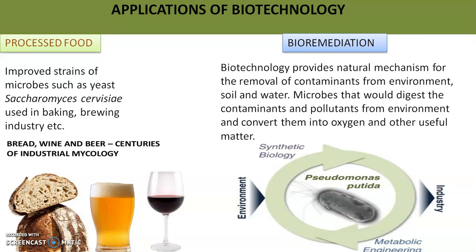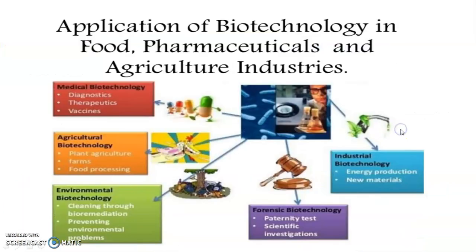This genetically modified microbe is used to clear oil spills in water bodies. Oil tanks carried by ships may have leakages, and when oil spreads on the surface of a water body, it blocks air and sunlight, which can be very lethal for aquatic organisms. Such genetically engineered microbes are introduced to clear the oil spills — that is bioremediation.